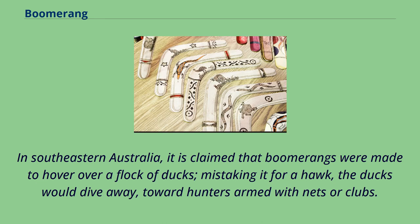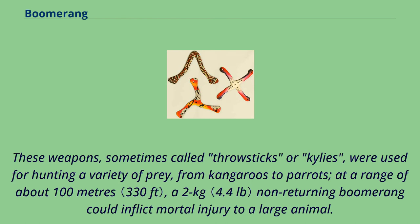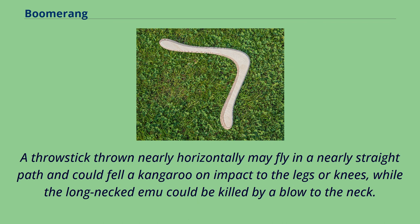It is further supposed that this was used to frighten flocks of birds into nets strung up between trees or thrown by hidden hunters. In southeastern Australia, boomerangs were made to hover over a flock of ducks — mistaking it for a hawk, the ducks would dive toward hunters armed with nets or clubs. Traditionally, most boomerangs used by Aboriginal groups in Australia were non-returning. These weapons, sometimes called throwsticks or kylies, were used for hunting a variety of prey from kangaroos to parrots. At a range of about 100 meters, a 2-kilogram non-returning boomerang could inflict mortal injury to a large animal. A throwstick thrown nearly horizontally may fly in a nearly straight path and could fell a kangaroo on impact to the legs or knees, while the long-necked emu could be killed by a blow to the neck.